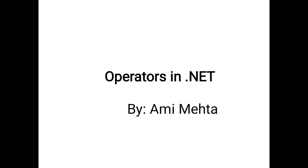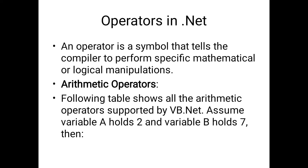What is an operator? An operator is basically something which operates on two things. For example, a telephone operator's task is to operate the telephone system. Similarly in .NET, in any language, an operator handles two operands — for two variables A and B, any particular thing that handles these two variables and gives some output is called an operator. An operator is a symbol that tells the compiler to perform specific mathematical or logical manipulation.